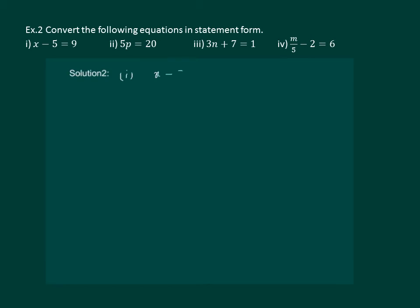x minus 5 equal to 9. We can write it as: Taking away 5 from x gives us 9.